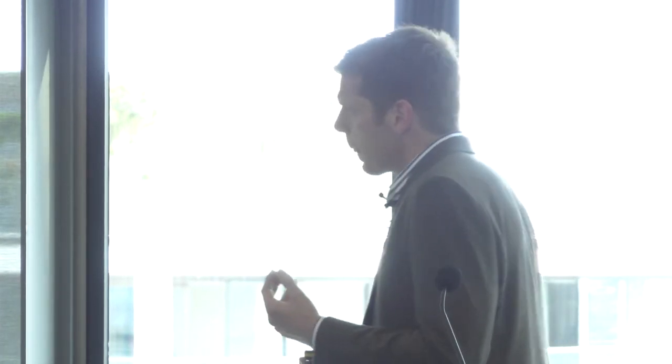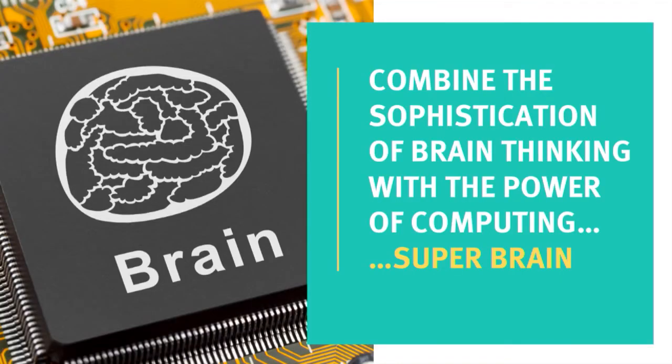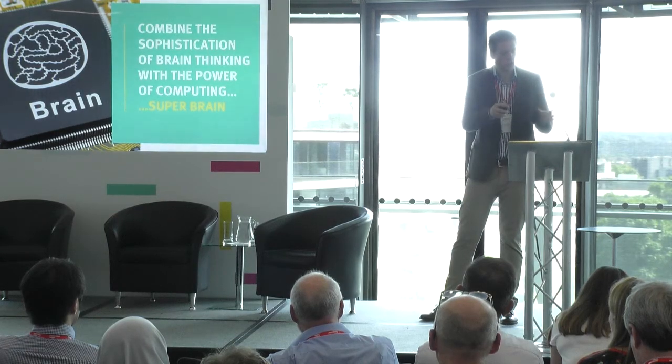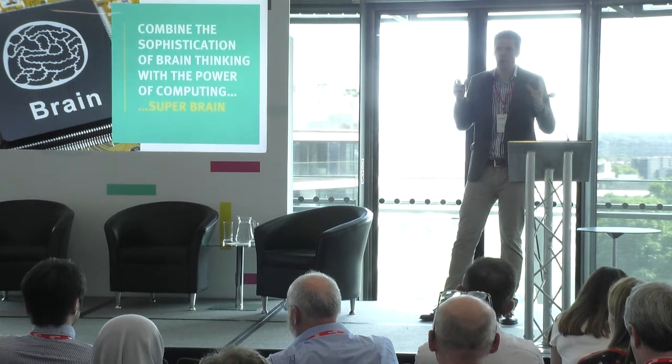Finally, what we have is traditional computing, which is fantastic at precise calculations and has been tremendously useful in the past and will continue to be. Now we have neuromorphic computing, which is fantastic at finding patterns in vast amounts of noisy data. If we take traditional computing and neuromorphic computing and combine everything together, then together with our brain, we actually have a super brain.